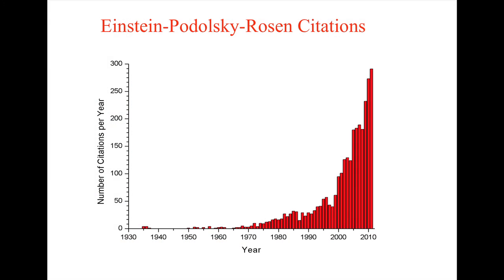This picture shows you the development of our field. The Einstein-Podolsky-Rosen paper came out in 1935, and in the beginning we had very few citations. Then it started in the 70s following Bell's theorem, and then we had the explosion of quantum information.